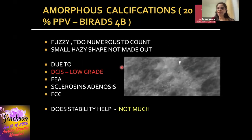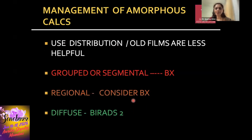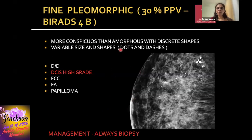Amorphous calcifications have a slightly higher positive predictive value and are straightaway BI-RADS 4B. These are fuzzy, powdery calcifications where you cannot make out the margin or distinguish each calcification distinctly. They can be caused by low-grade DCIS among other differentials, and stability does not help much here. If bilateral, grouped, or diffusely distributed they may be classified BI-RADS 2, but if grouped, segmental, or regional, we proceed to biopsy.